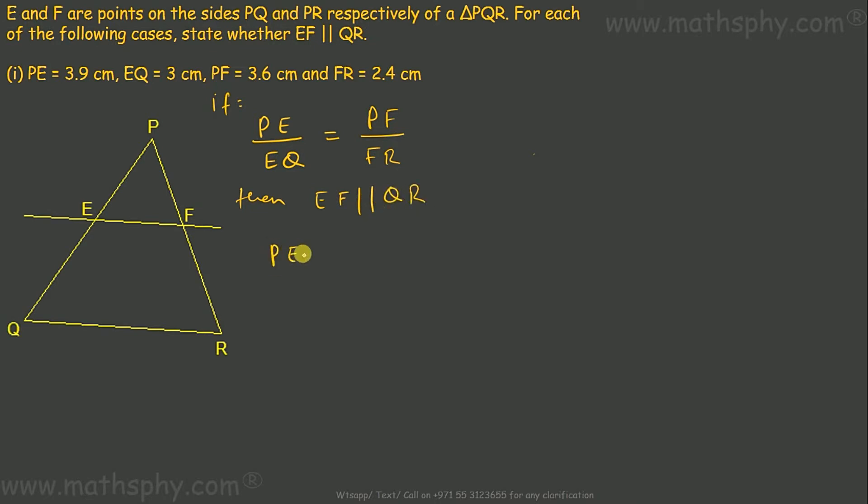Let's find out PE over EQ. PE is 3.9, EQ is 3. So this would be 1.3 over 1. PF over FR. PF is 3.6, FR is 2.4. So this is 1.5 over 1. So here PE over EQ is not equal to PF over FR.